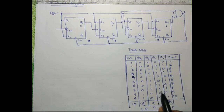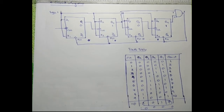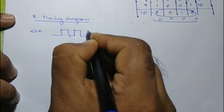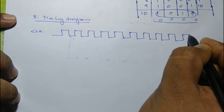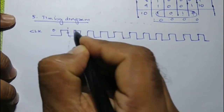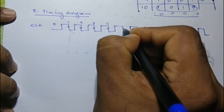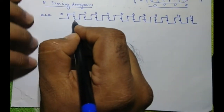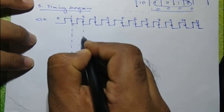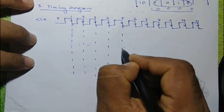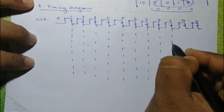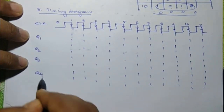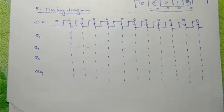What remains is the timing diagram. We shall draw the timing diagram of the flip-flops. First, we draw the clock, marking the 0th clock and the negative edges. Let's mark these negative edges with dotted lines. Q1 will toggle at each negative edge of the external clock — at the first, second, third negative edge, and so on.